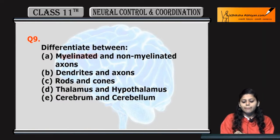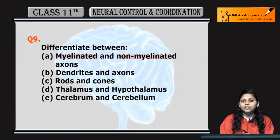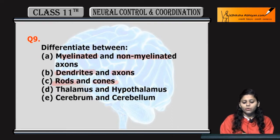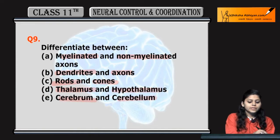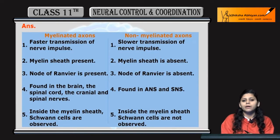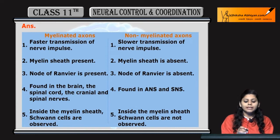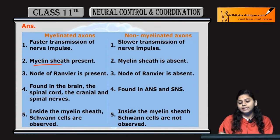Differentiate between myelinated and non-myelinated axons, dendrites and axons, rods and cones, thalamus and hypothalamus, cerebrum and cerebellum. Point 1: Myelinated axons mein myelin sheath present hogi, non-myelinated mein absent hogi.